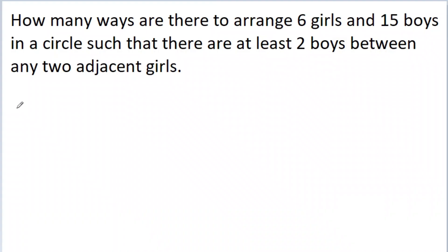We have a very nice problem of combinatorics: how many ways are there to arrange 6 girls and 15 boys in a circle such that there are at least 2 boys between any two adjacent girls? I will solve this problem by two methods using two different concepts.